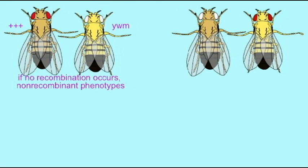If crossing over separates the mutant white gene from the other two, then there will be male flies in the F2 generation which are yellow and miniature but do not have white eyes. And there will be other flies which have white eyes but are not yellow nor do they have miniature wings. These are the phenotypes which will be observed if white is separated from the other two phenotypes.